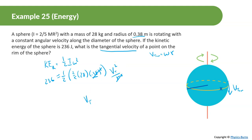Plugging into the calculator: 236 times 2 times 5, divided by 2, divided by 28, then take the square root — we get 6.49 meters per second.